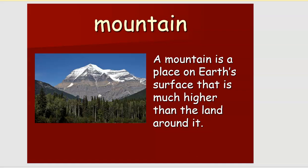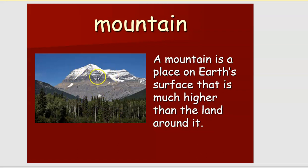What is a mountain? A mountain is a place on the earth's surface that is much higher than the land around it. If you can see this picture, it is much higher than the land — this is the land, and this is much higher than the land.